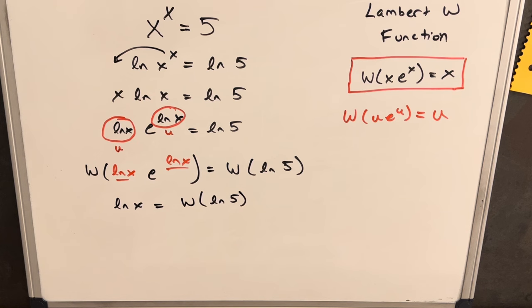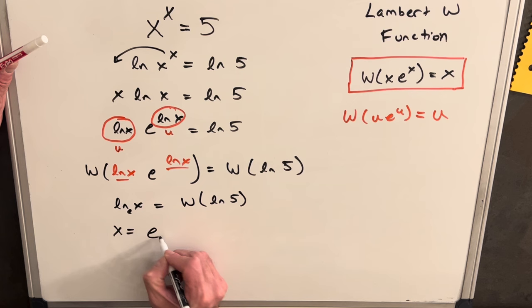But then we get our property of the exponential, so we can write x as e to the Lambert W ln 5. And then this is a fine answer here.